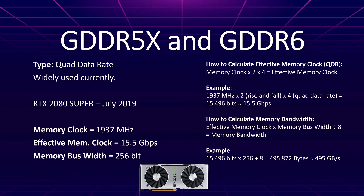Now we're going to move on to GDDR5X and GDDR6X. These two memory technologies are actually quad data rate and they're pretty widely used. GDDR5X was on the GTX 1080 and 1080 Ti. GDDR6X is on RDNA2 cards like the 6800 XT, or cards like the RTX 2080 Super or RTX 3060 Ti. All of these types of memory are currently used in most cards from AMD or Nvidia. For example, the RTX 2080 Super has a memory clock of 1937 MHz, an effective memory clock of 15.5 Gbps, and a memory bus width of 256 bit.